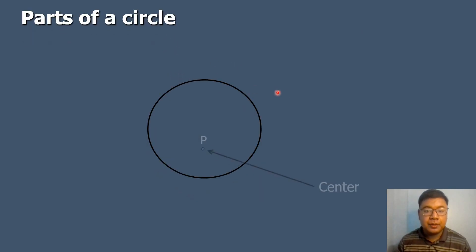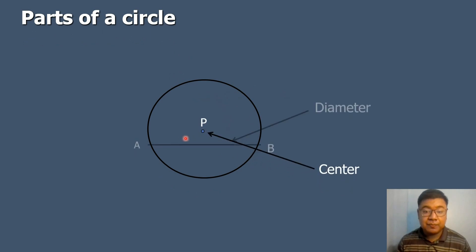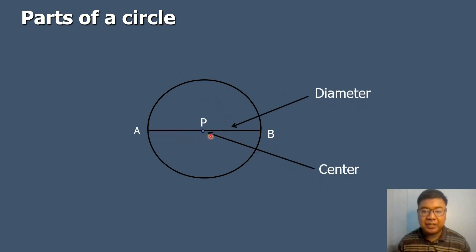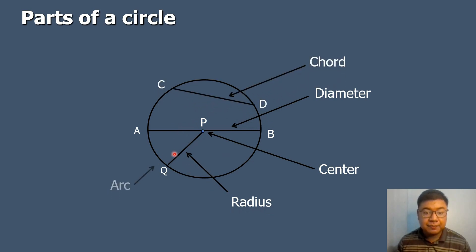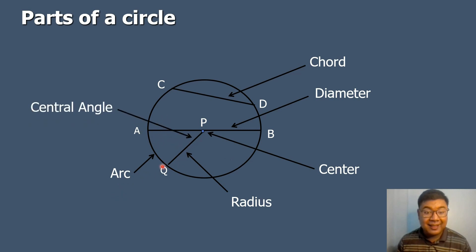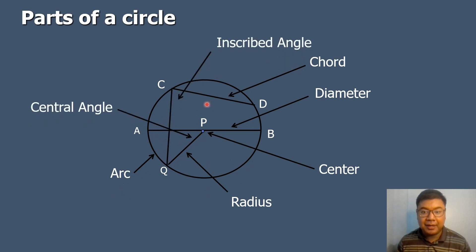So these are the parts of the circle that we will be discussing in today's topic: the center, the diameter, the radius, the chord, the arc, the central angle, and lastly, the inscribed angle.